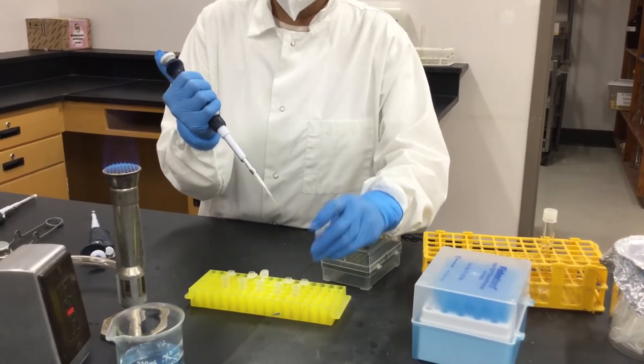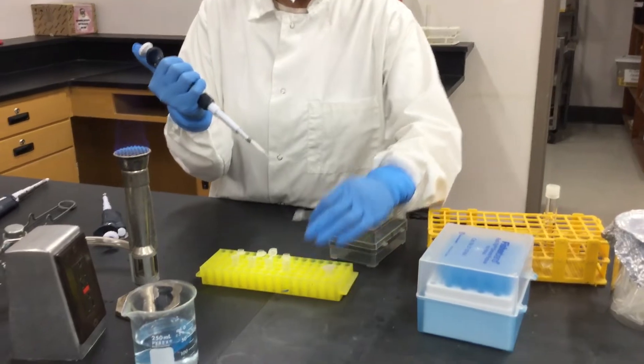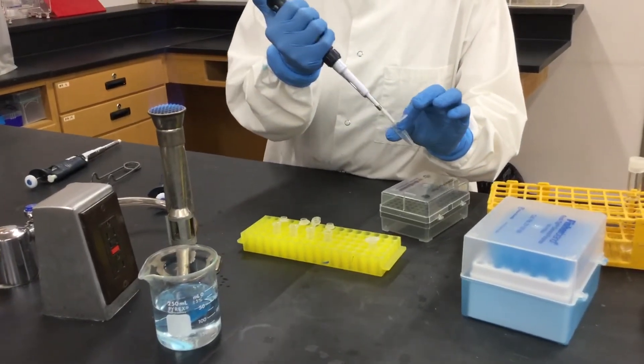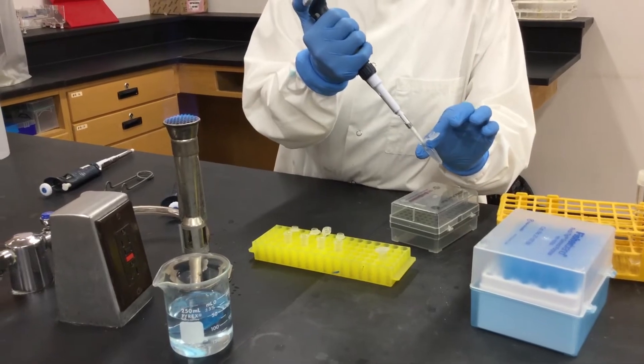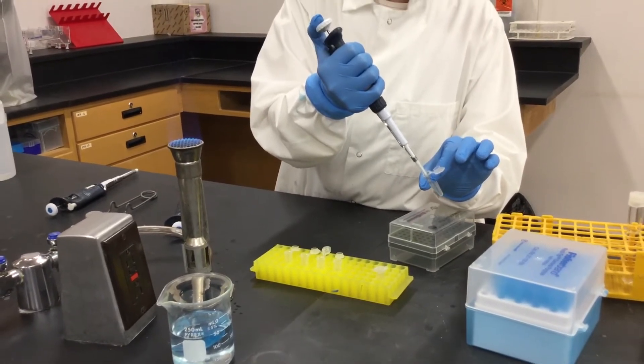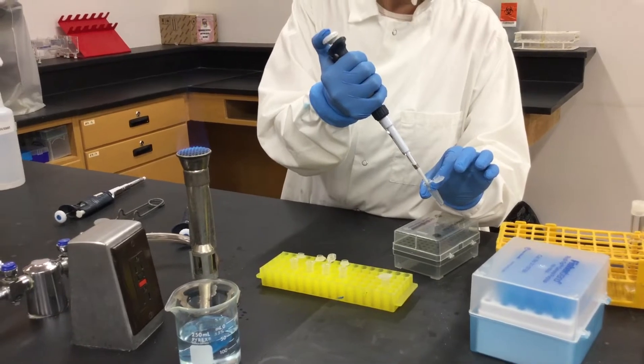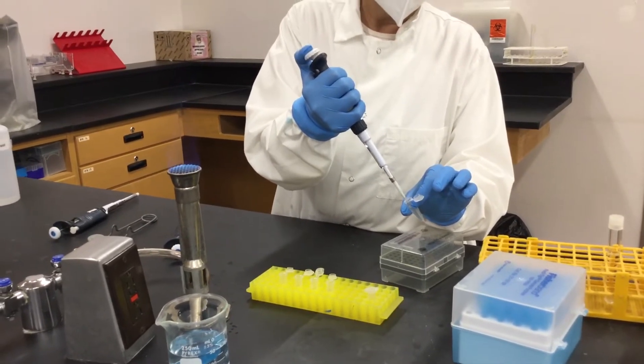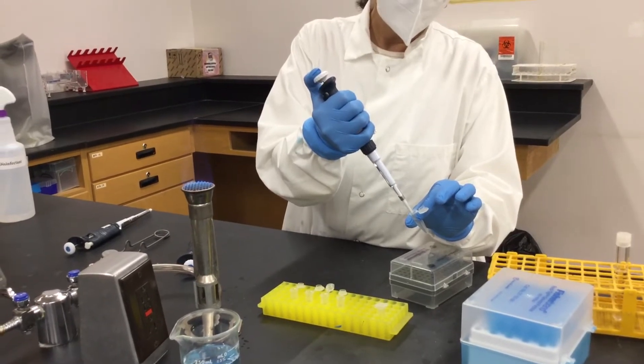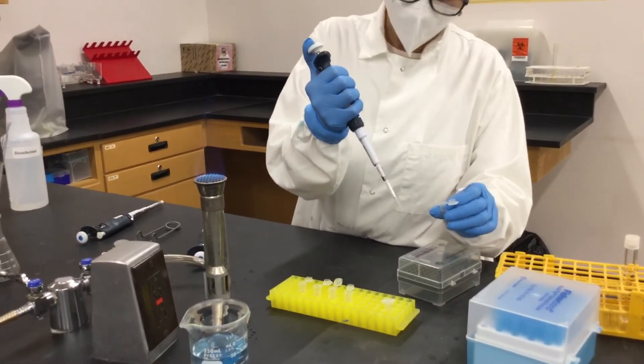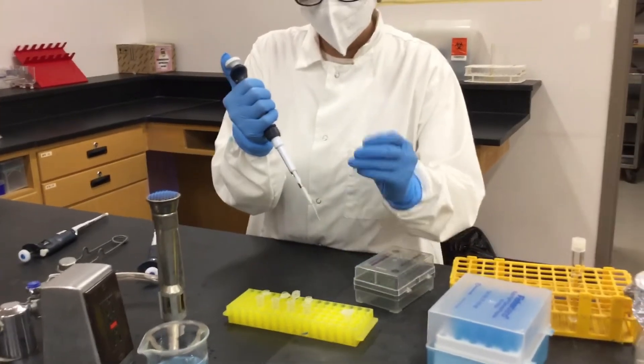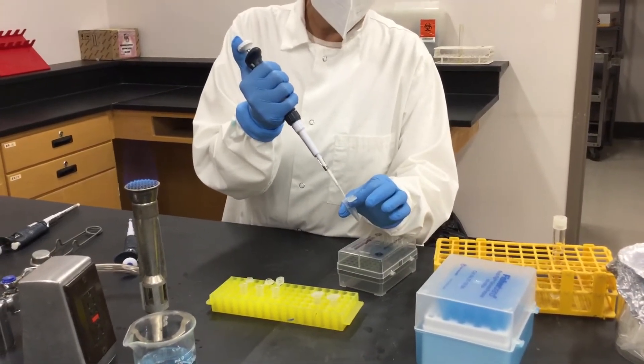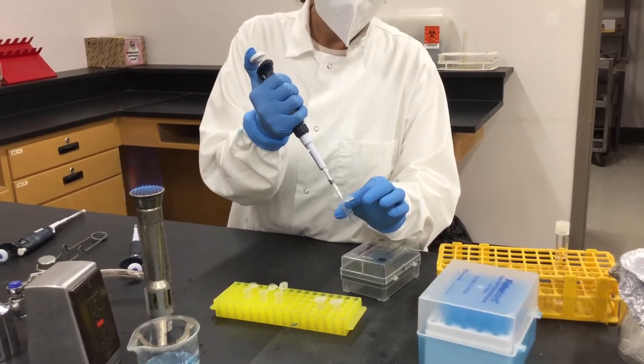Open your tube close to the sterile area. Grab the 10 microliters, add it into here by pressing the plunger and then releasing it up and down several times until you have a homogeneous mixture. And then grab 10 microliters, close this. This was the 10 to the minus 2, and add it to the next tube which is going to be the 10 to the minus 4.